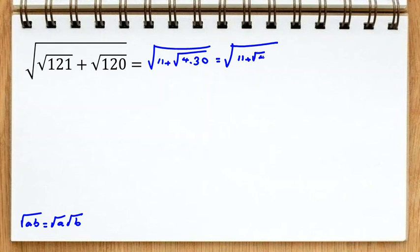Here we can write it as 11 plus square root of 4 times square root of 30. Square root of 4 is 2, so we can write it as 11 plus 2 times square root of 30.